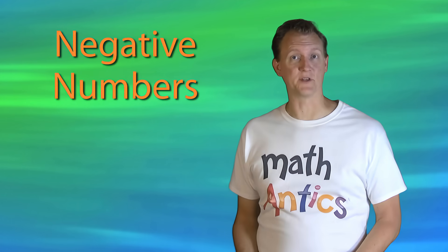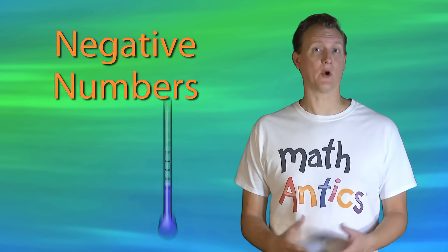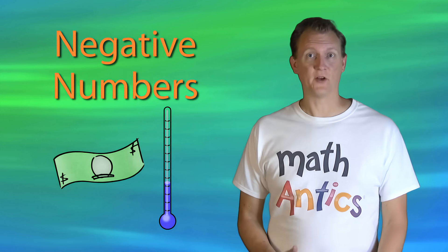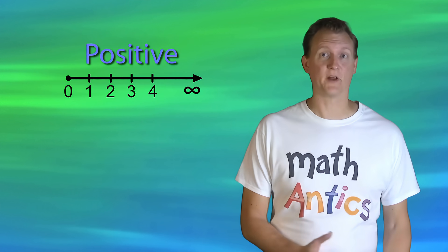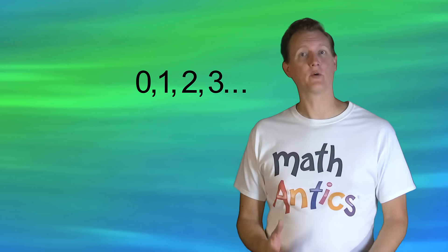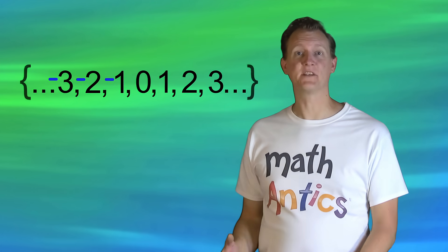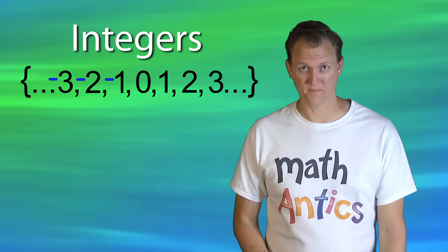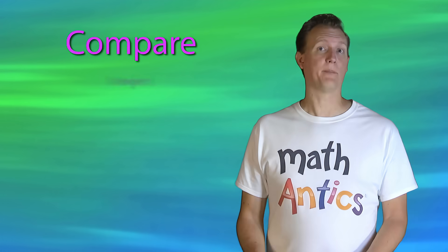Alright, so in this video, we learned what negative numbers are and how they can be used to describe things in the real world. They're just like positive numbers, but on the other side of zero on the number line. And we learned that the whole numbers, along with their negative counterparts, form the set of numbers we call integers.